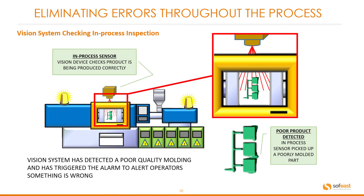Let's have a look at another vision system checking in-process inspection. Here we have an injection mold machine. The in-process vision system is checking mold components as they are ejected out of the mold. In this case, the vision system has detected a poor quality molding and triggered an alarm to alert operators. The sensor has picked up a poorly molded product with a lot of flash. Therefore, operators need to adjust something or check the process before continuing and creating more scrap products.